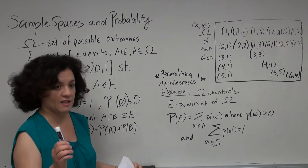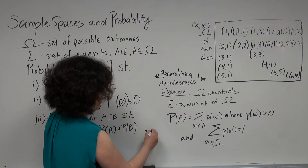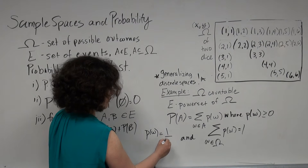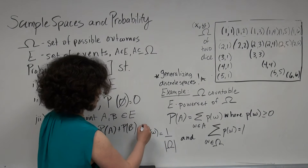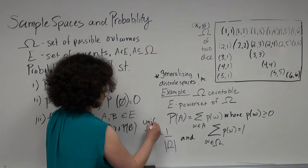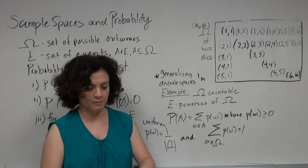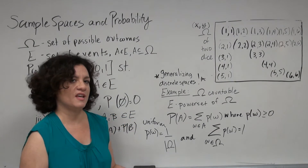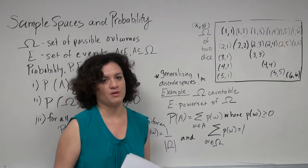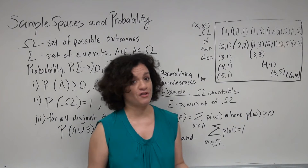Often the probability of a single outcome is 1 divided by the size of the sample space, and this gives us a uniform distribution. It's very common — for example, when tossing one coin with outcomes head or tail, we say the probability of head or tail is equal to one half.